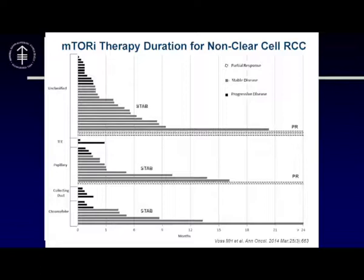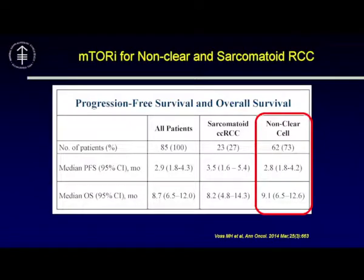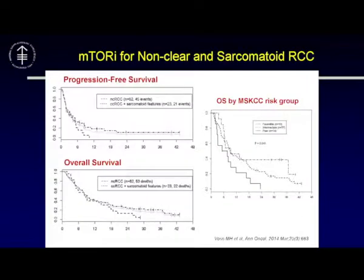Looking at the Memorial data on the 62 non-clear cell patients, the median PFS is 2.8 months and the median OS is 9.1 months. This is a retrospective study that mixed sarcomatoid and non-clear cell, but it's what's available. What was particularly notable was that the rapalogs do have some activity in sarcomatoid and non-clear cell histologies, but what was more important for overall survival was the MSKCC risk group — more than the histology.